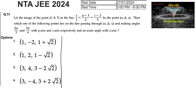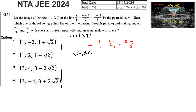Let us consider the point P(1, 0, 7) and its image with respect to the line x/1 = (y−1)/2 = (z−2)/3 be the point Q(α, β, γ). Let us draw the line which is perpendicular to the given line, and let M be the foot of the perpendicular upon the line.